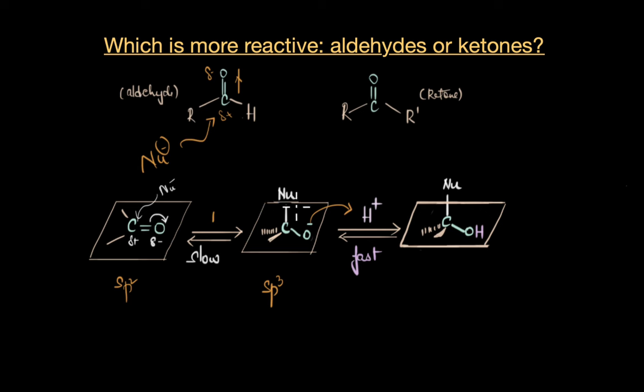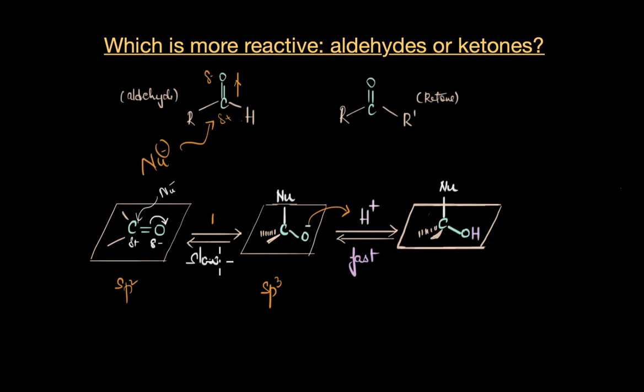This alkoxide intermediate abstracts a proton from the acidic medium, finally giving us a neutral molecule. Now at the end of this reaction, you can see an addition of a nucleophile as well as a proton across the C double bond O group. So this is what basically happens in a typical nucleophilic addition reaction.